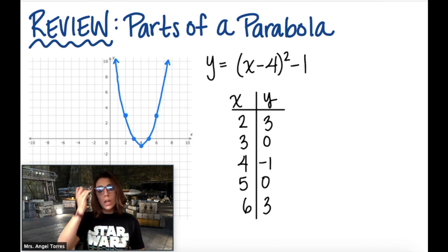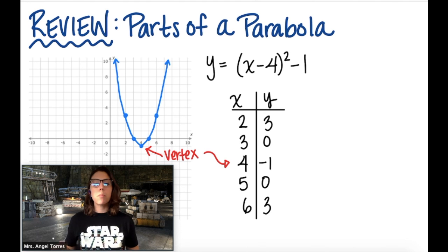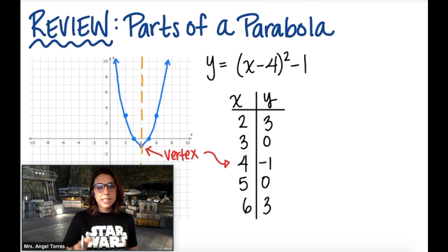So the most important point on a parabola is the parabola's vertex. The vertex is the only point that is unique because it's the only input that produces one unique output. In other words, it's not reflected. Going along with the vertex is the parabola's axis of symmetry. The axis of symmetry is the invisible line that crosses directly through the vertex and cuts the parabola in half.